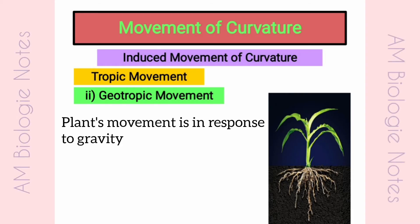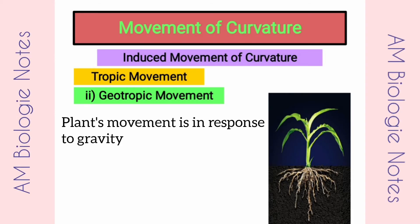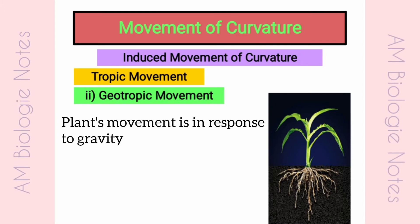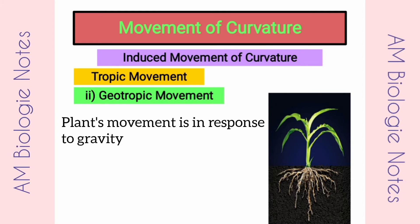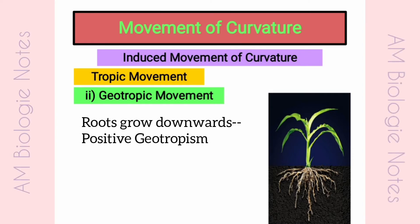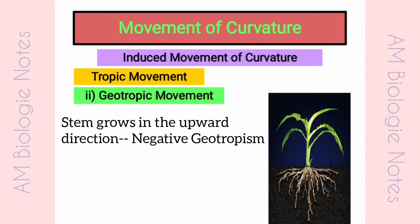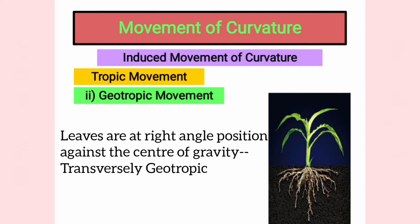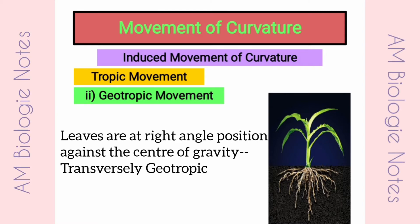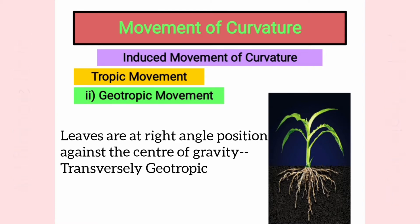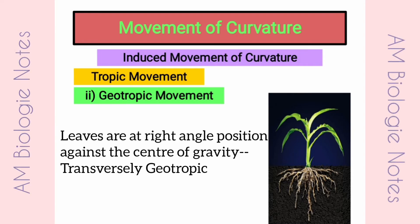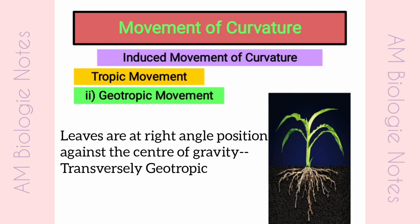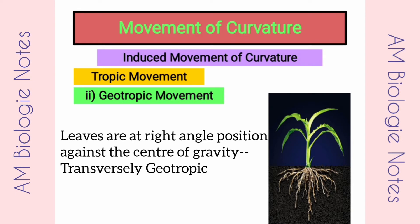Geotropic movement: In geotropism, plant movement is in response to gravity. The roots grow downwards, indicating positive geotropism. The stem grows in the upward direction, signifying negative geotropism. The leaves are generally placed at right-angle position against the center of gravity, which signifies that leaves of a plant are transversely geotropic.